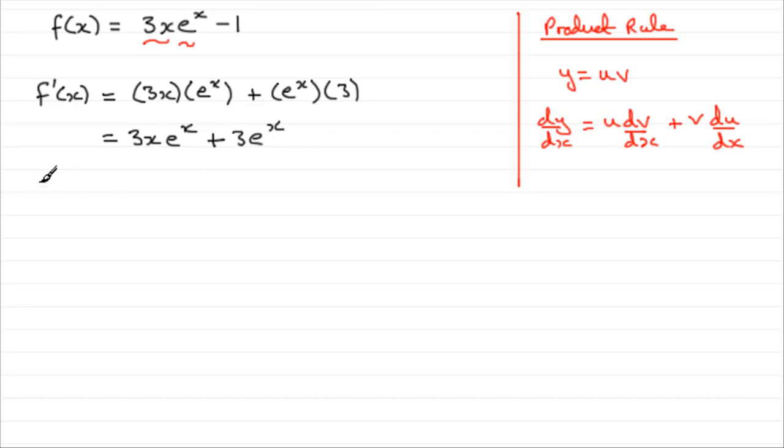Now, we know that at turning points, and I'd encourage you to write this in your solution, at turning points we know that the gradient, that's given by f dash x, equals 0.